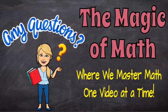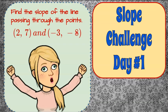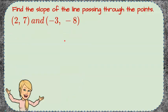Welcome to the Magic of Math where today we're going to begin a five-day slope challenge. You're going to be asked to find the slope of the line passing through two points using the slope formula. Here's day one's challenge. Find the slope of the line passing through the points (2, 7) and (-3, -8).